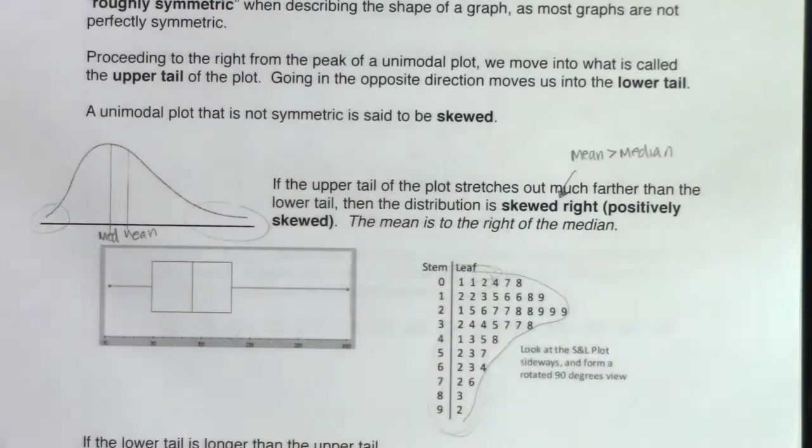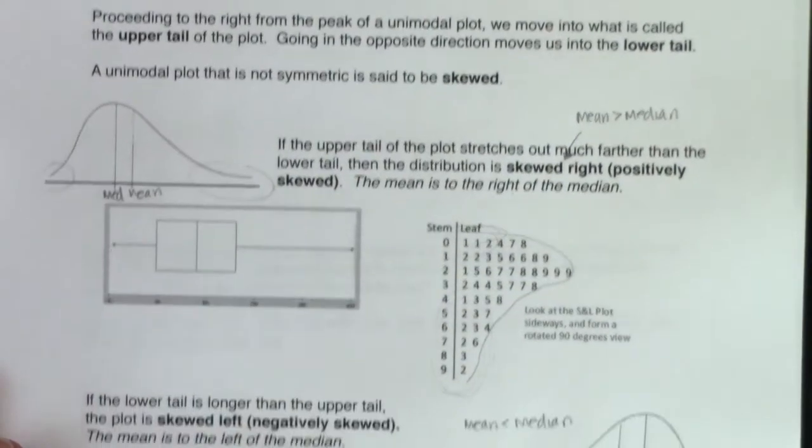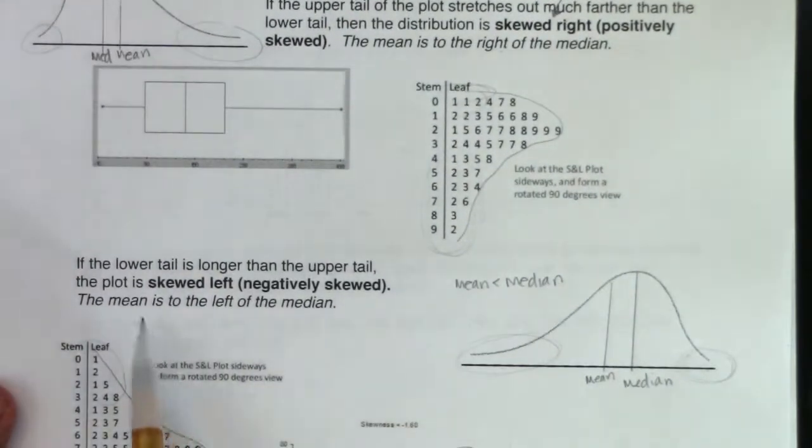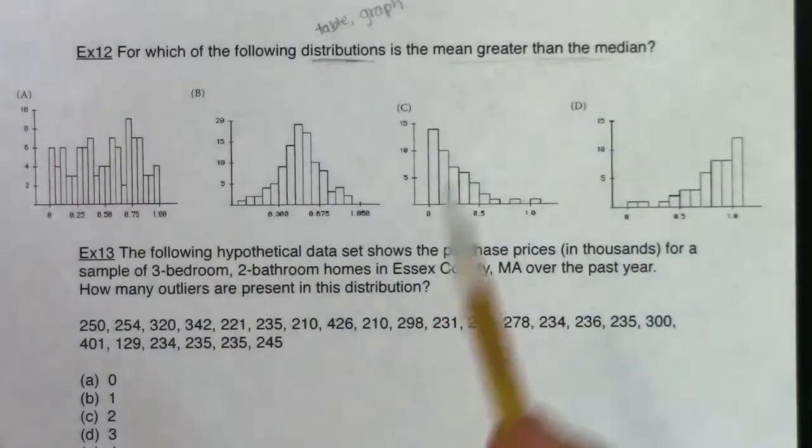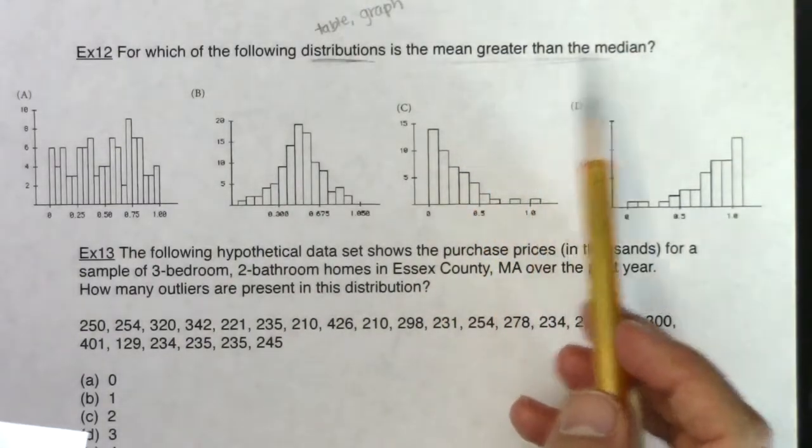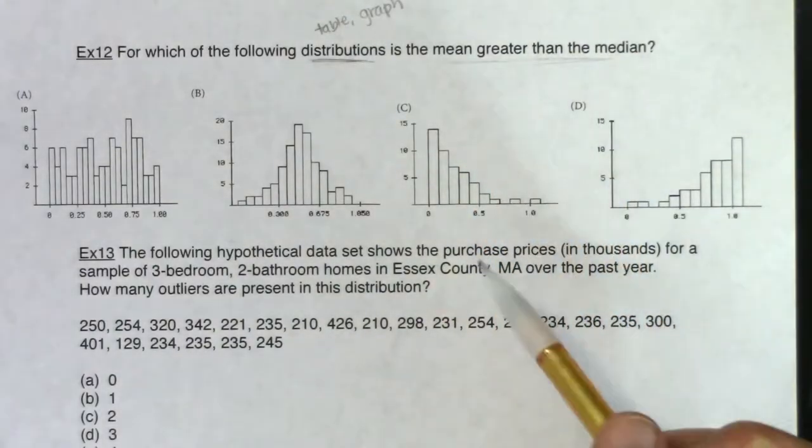We have here that in a skewed right graph, the mean is to the right of the median, where in a skewed left graph, the mean is to the left of the median. So let's think about what example 12 is asking us. We want the mean to be greater than the median.